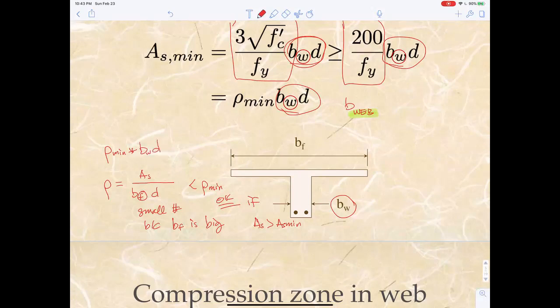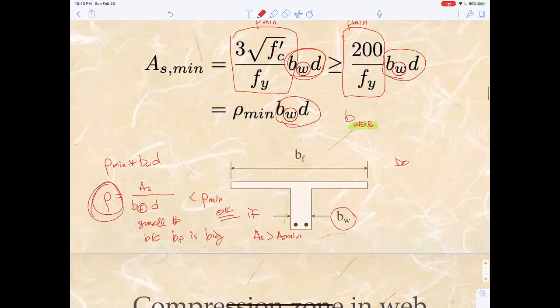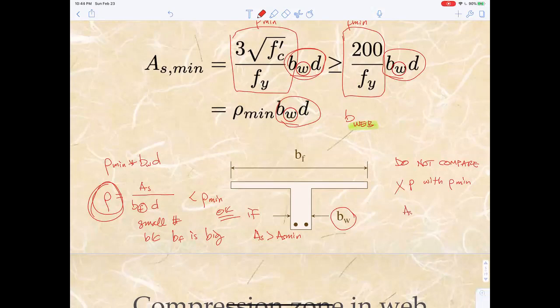Do not compare rho with rho-min. Again, the rho for T-beams will be small because B is large. Don't do that - compare AS with AS-min, where AS-min is rho-min times B-web times D.